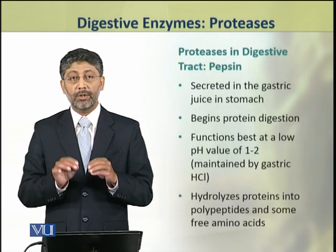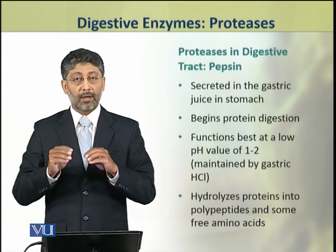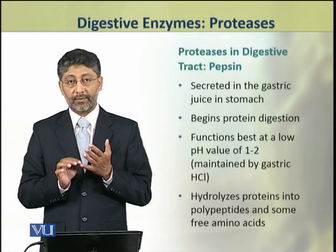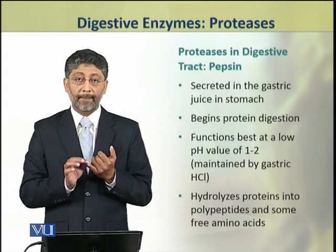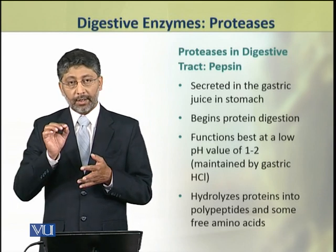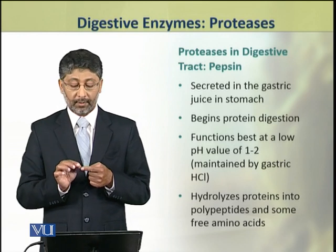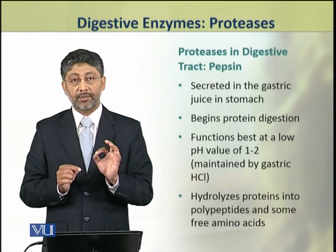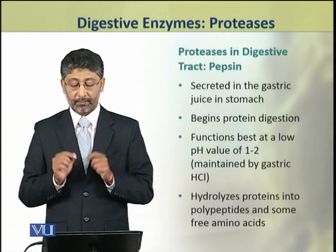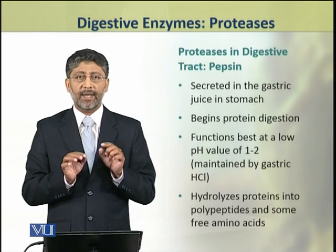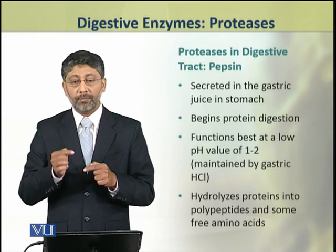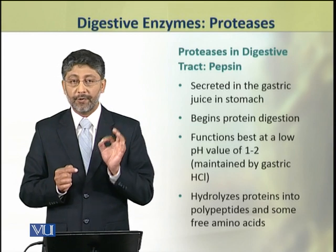Now we shall take a few examples of proteases secreted in the digestive juices of the digestive tract. First, pepsin. Pepsin is secreted in the gastric juice in the stomach. It is the enzyme which begins protein digestion. It functions best in acidic pH ranging between 1 and 2. This acidic pH is maintained by gastric hydrochloric acid. Pepsin hydrolyzes proteins into polypeptides and few free amino acids.